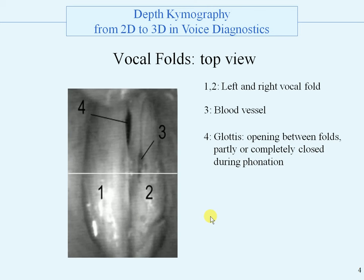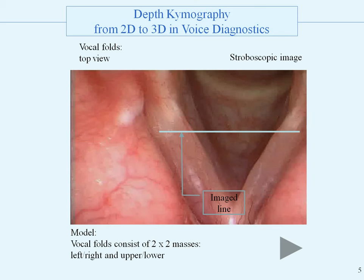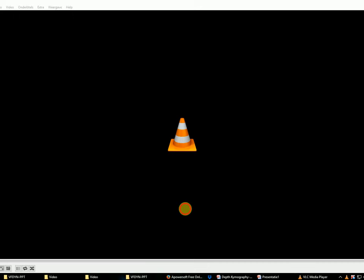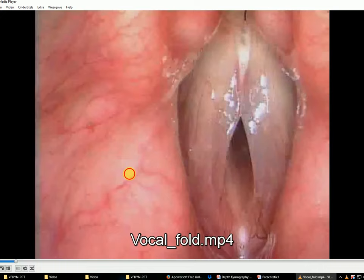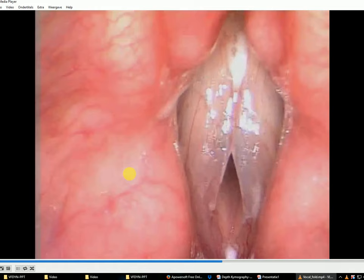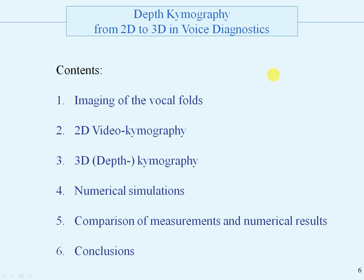Here is the line that is imaged in videokymography. This line is imaged repeatedly. Here is a top view of vocal folds and we will now start a stroboscopic image.